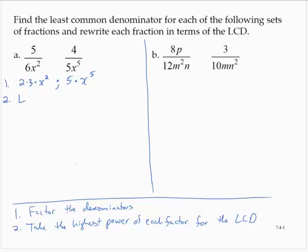For the second step, we take the highest power of each factor for the LCD. I see four unique factors here: 2, 3, 5, and x. So the LCD is 2 times 3 times 5 times x to some power. Do we choose x squared or x to the fifth? We take the highest power, so we choose x to the fifth.